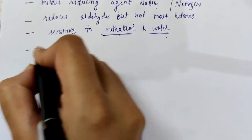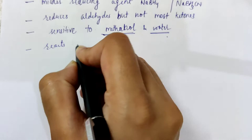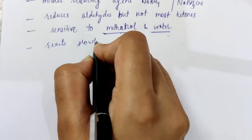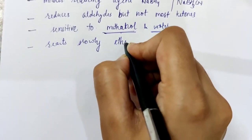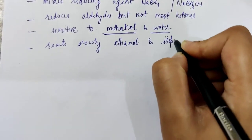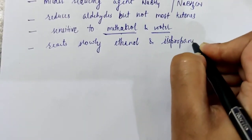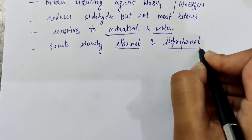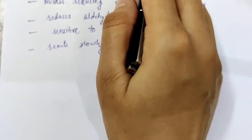It reacts slowly with ethanol and isopropanol. These two solvents can be used to carry out reduction reactions using STAB.